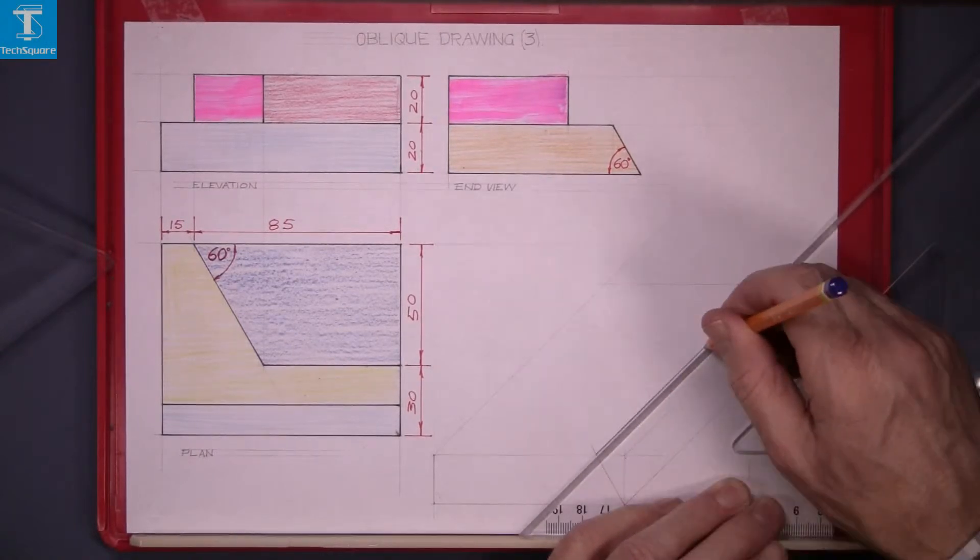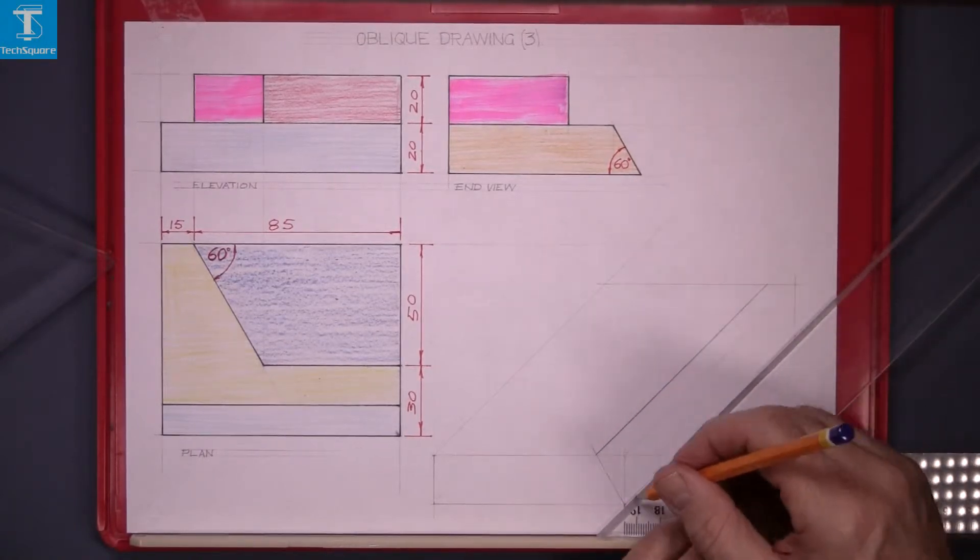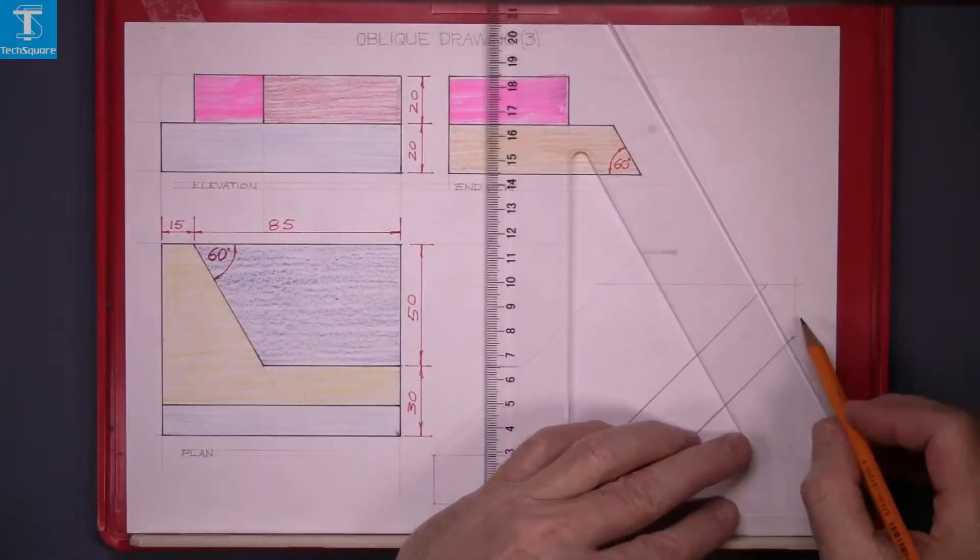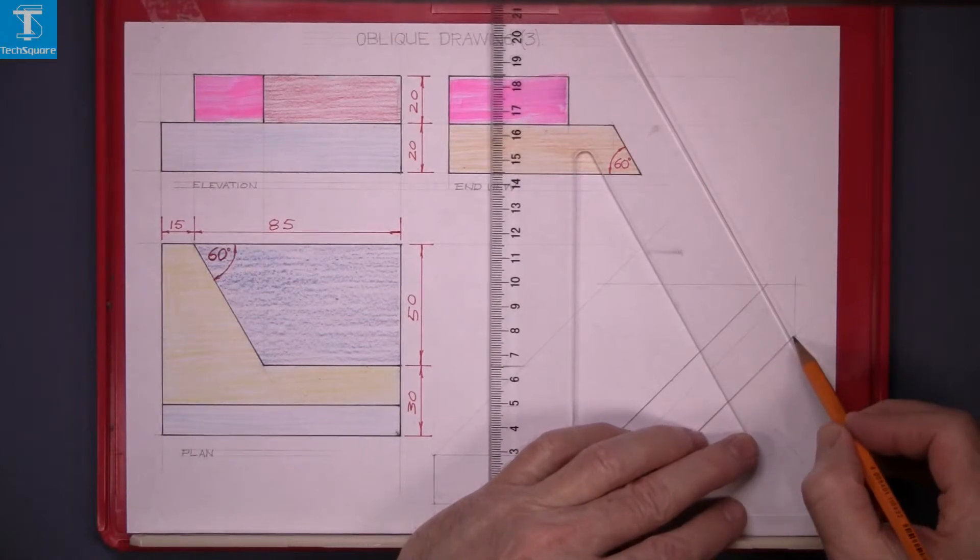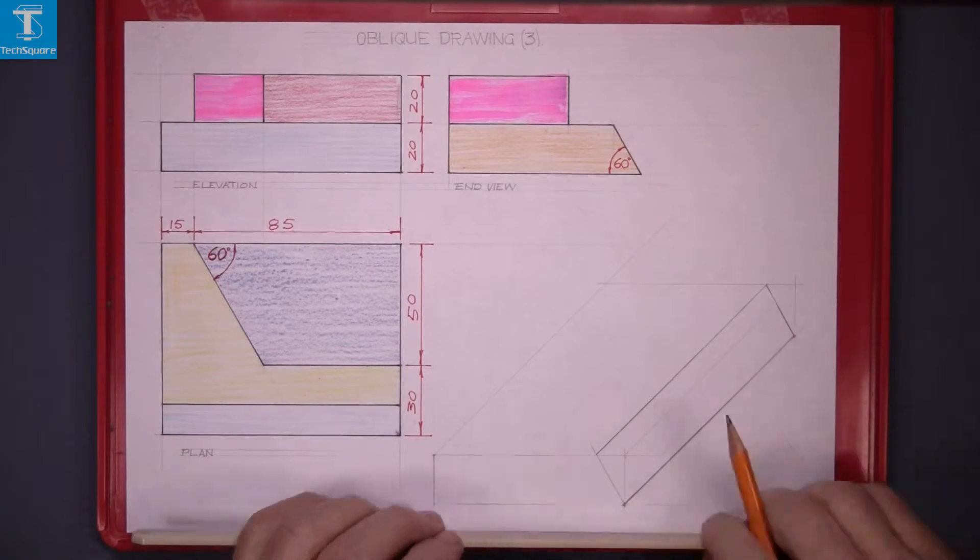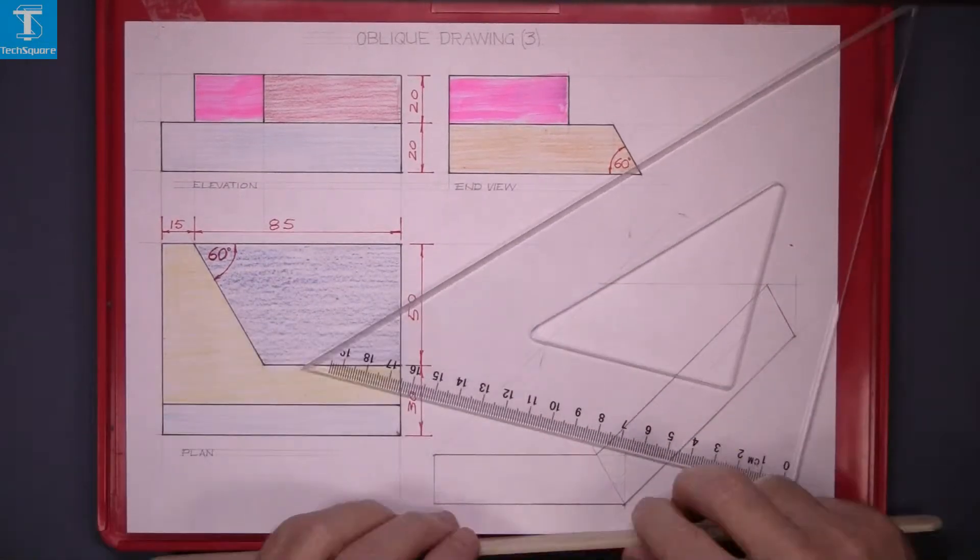Using your 45 degree set square draw that line back there, and then the 60 degree line down at the far end and that's the block for the base of the piece. Line that in.